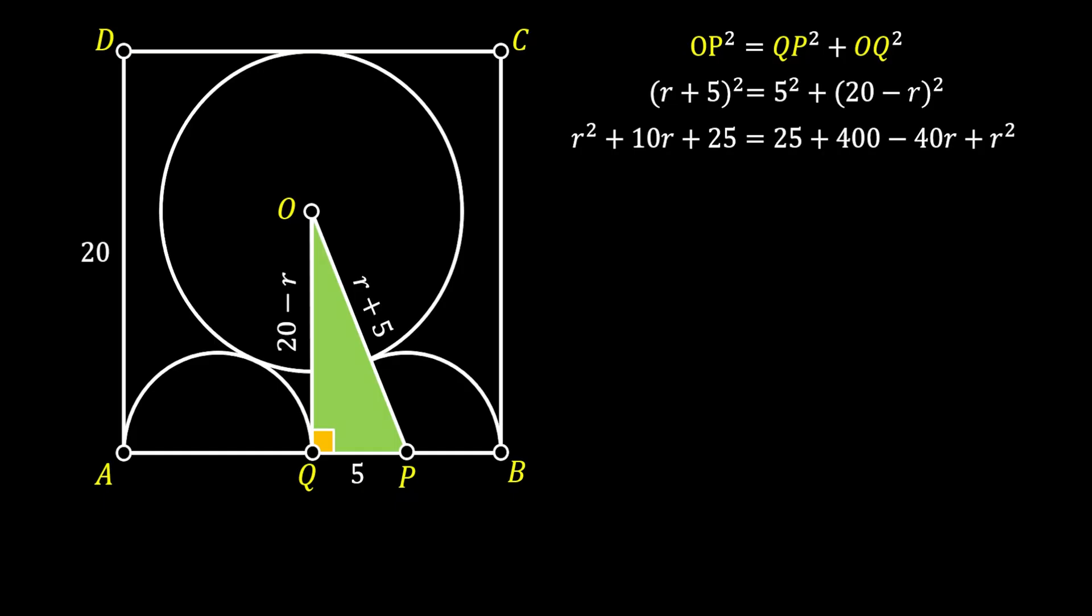We can simplify by canceling r squared on both sides of the equation and also cancel 25 on both sides. We get r² + 10r + 25 = 25 + 400 - 40r + r². Grouping the unknowns on the left side, we get 10r + 40r = 400, which gives us 50r = 400, which means that r must be equal to 8.